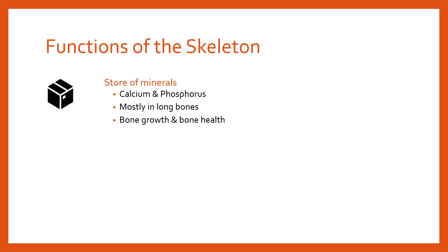Calcium and phosphorus are very important for other functions around the body, not least for muscular contraction. This is an interesting place where the skeletal and muscular systems work together — calcium especially is important for muscular contraction; without calcium there could be no muscular contraction. If there's a reduced volume of calcium in the diet for a while, the bones will release some of that calcium so that muscle contraction can continue.